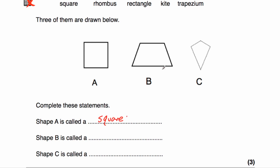Shape B has one pair of parallel lines, so shape B is a trapezium. Shape C is clearly a kite — it has one line of symmetry, two pairs of equal length sides (the top two and the bottom two), and the opposite angles are equal to each other. So shape A is a square, shape B is a trapezium, and shape C is a kite.